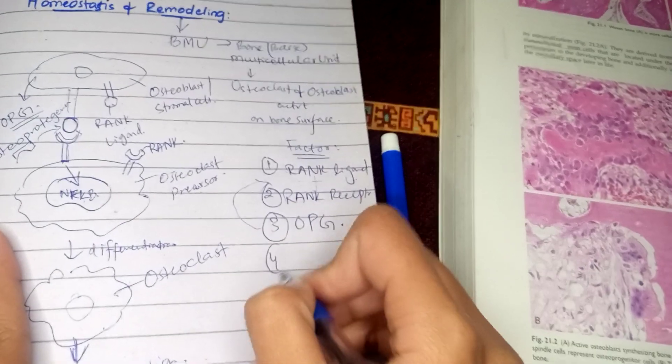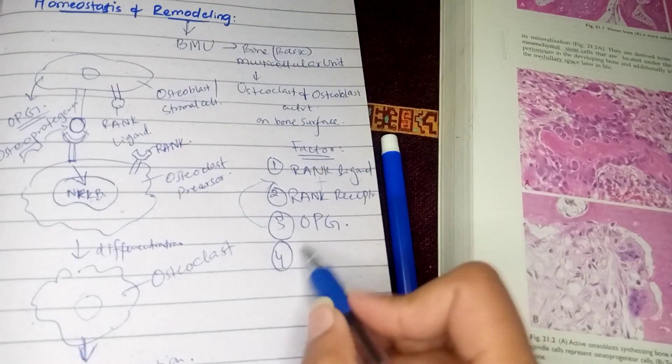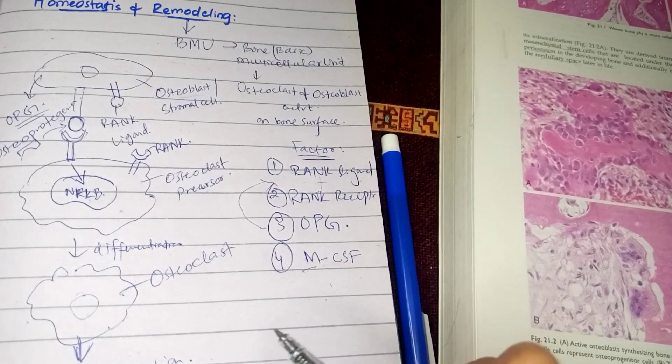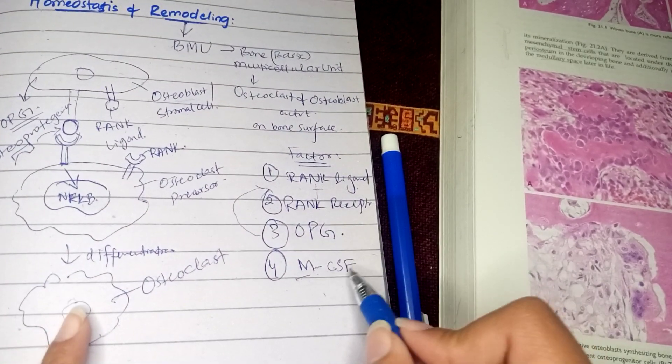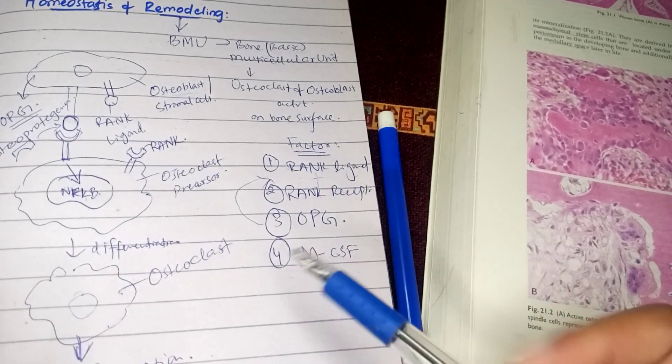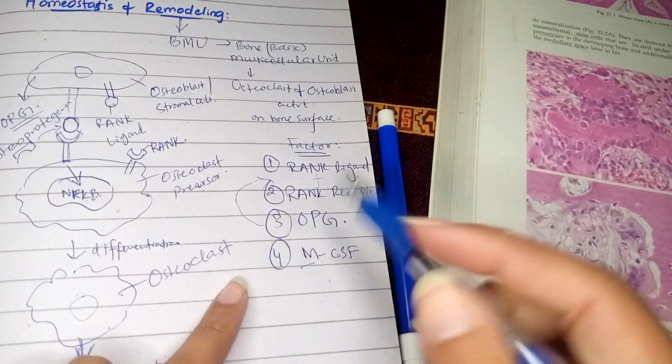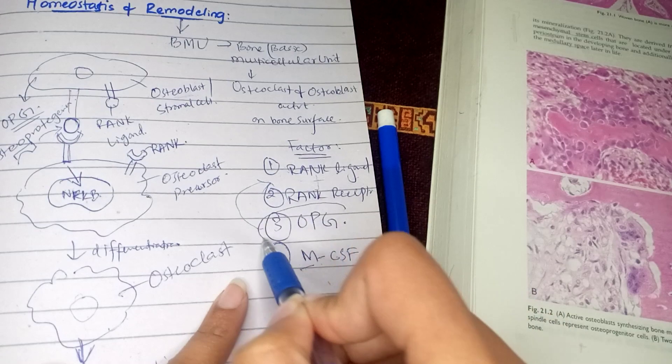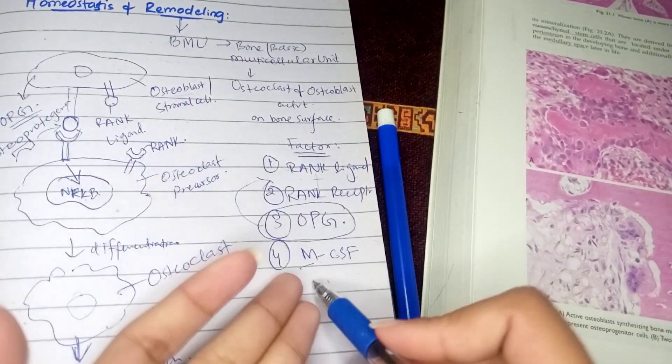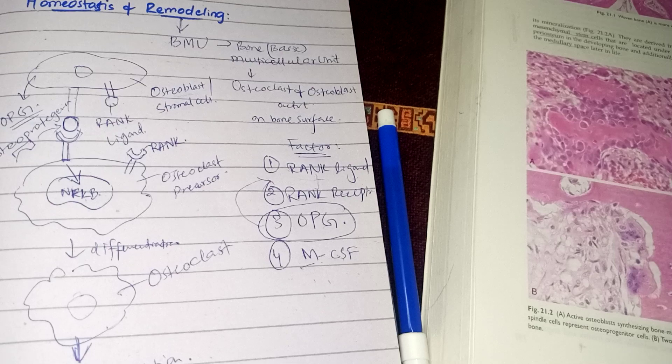The fourth factor is MCSF released by osteoblasts. MCSF is monocyte colony stimulating factor. This factor helps the osteoblast precursors form a functional osteoclast. So far we have only one agent stopping differentiation, while three factors promote differentiation and help bone resorption.